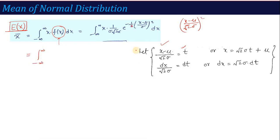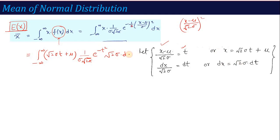Using the substitution, the limits remain from minus infinity to infinity. Substituting x = √2·σ·t + μ, the integral becomes: (1/σ√(2π)) · ∫(−∞ to ∞) (√2·σ·t + μ) · e^(−t²) · √2·σ · dt. The √2 and σ terms cancel out, giving one term: (1/√π) · ∫(−∞ to ∞) √2·σ·t · e^(−t²) dt, and another term: (μ/√π) · ∫(−∞ to ∞) e^(−t²) dt.